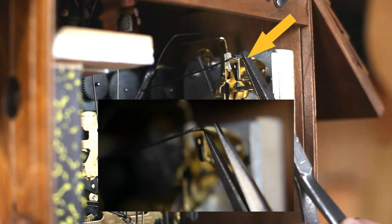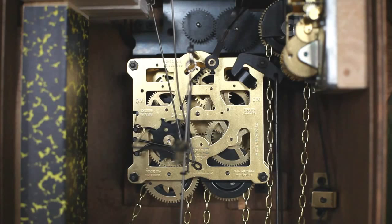The wire should then be bent into a position where it does not touch the fanfly while inactive, but prevents the music box from turning before and while the cuckoo is calling.